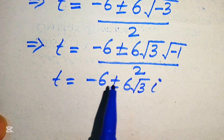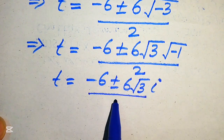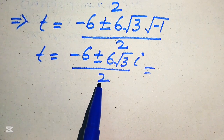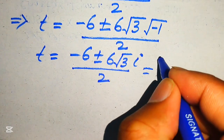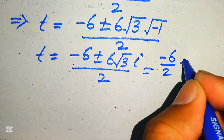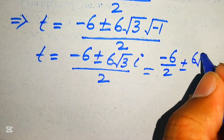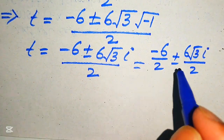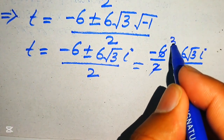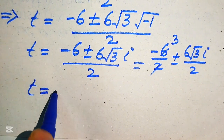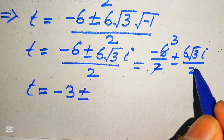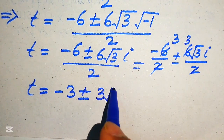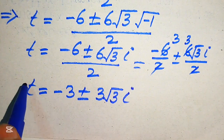In the next step, we break this fraction into two parts: negative 6 over 2, plus or minus 6 times square root of 3 times iota, divided by 2. Cancelling, we get t equals negative 3 plus or minus 3 times square root of 3 times iota, since 6 divided by 2 gives 3.